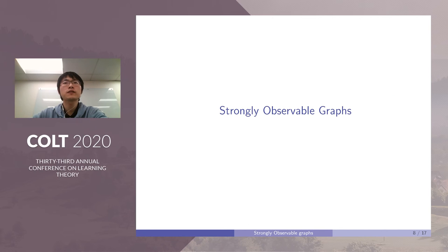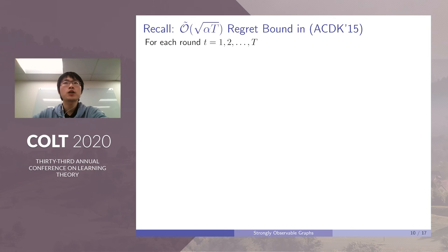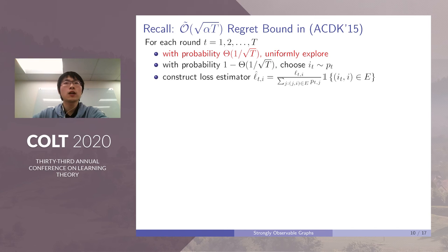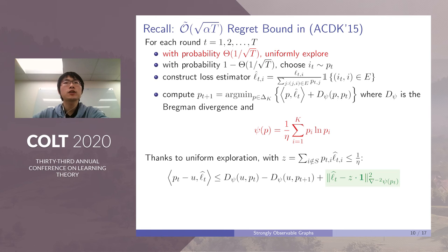Let me first introduce our results for strongly observable graphs. The high-level idea is to use Online Mirror Descent, or OMD, with different regularizers. OMD is very popular in designing no-regret online learning algorithms. In the following, we will show step-by-step how we obtain √(κL*) bound. As we mentioned before, √(αT) regret is obtained by Alon et al. Their algorithm is to uniform explore with probability θ = 1/√T, and with the remaining probability, choose i_t according to the current strategy p_t. After receiving loss and constructing typical importance weighted estimator, they use OMD with entropy regularizer to update their strategy.